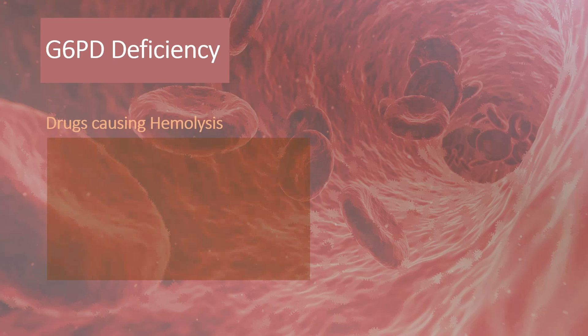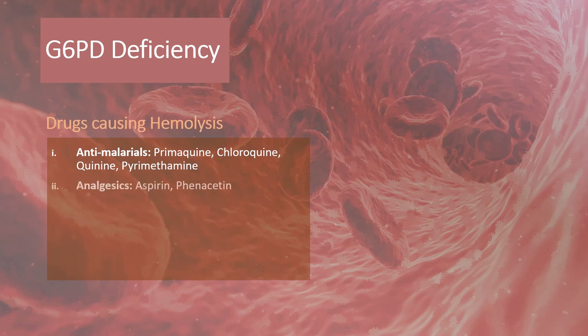Drugs causing hemolysis in G6PD deficiency include anti-malarials such as primaquine, chloroquine, quinine, and pyrimethamine. Analgesics such as aspirin and phenacetin, and antibiotics like ciprofloxacin, sulfonamides, and nitrofurantoin.